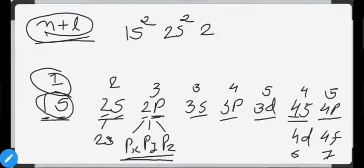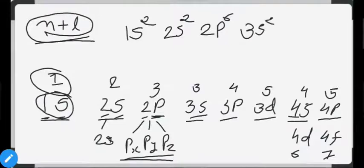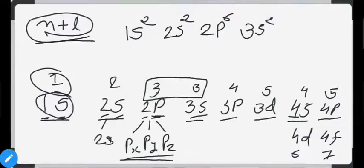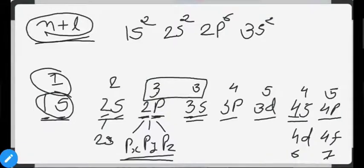When n+l values are equal — as for 2p (n+l=3) and 3s (n+l=3) — we look at the principal quantum number. Higher principal quantum number means higher energy. So 3s is higher in energy than 2p; that's why 2p is filled before 3s. Then comes 3p, which takes 6 electrons.